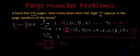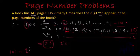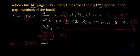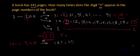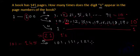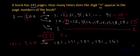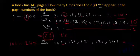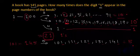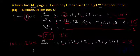Now we will consider page numbers from 101 to 145. For the 1s at units place, they appear in: 101, 111, 121, 131, and 141. So how many 1s are there at units places? Counting only the units digits: 1, 2, 3, 4, and 5. From 101 to 145, there are only 5 ones at units places.